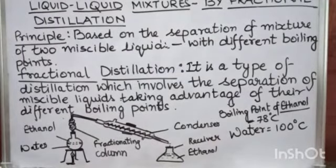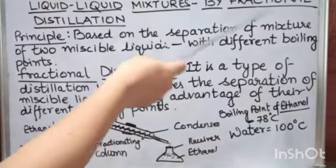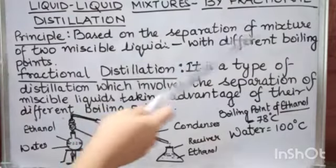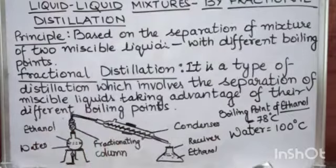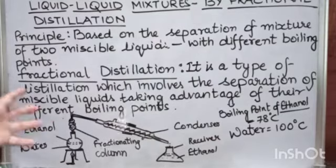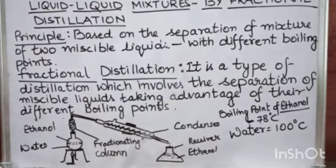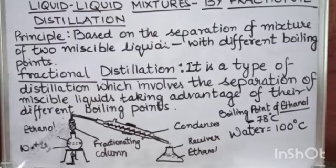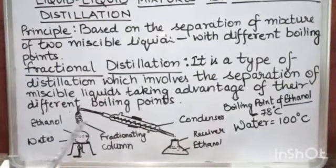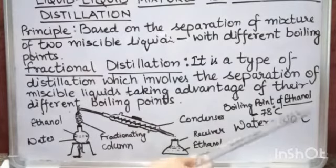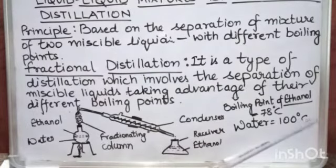To separate two miscible liquids or to separate a homogeneous mixture, fractional distillation is used. In this process, a mixture of two miscible liquids is separated based on their different boiling points. This setup is similar to simple distillation, but the only difference is that fractional distillation has a fractionating column with many glass beads in it. For example, ethanol and water have different boiling points — ethanol has a boiling point of 78°C whereas water has a boiling point of 100°C.